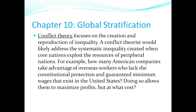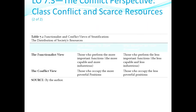The conflict theory's view on global stratification focuses on the creation and reproduction of inequality. It looks at how the core — or richer nations — exploit the resources of the peripheral, or poorer, nations. Remember the three tiers: core nations, semi-peripheral nations in the middle, and peripheral nations. Make sure you review these slides on the conflict and functionalist perspective.